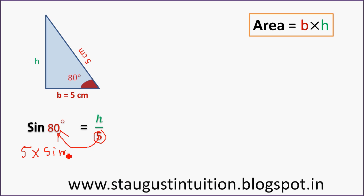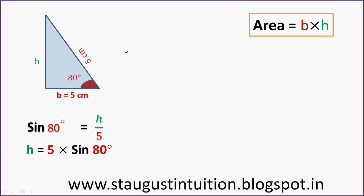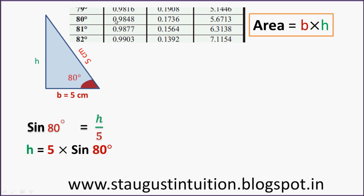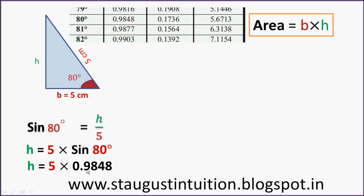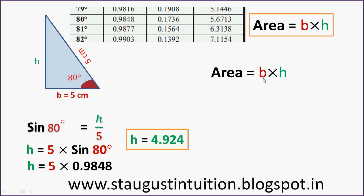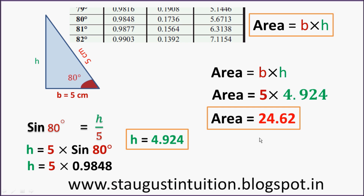Sin 80° gives us the height. So height H is equal to 5 into sin 80°. Sin 80° is equal to 0.9848, so H is equal to 5 into 0.9848, which gives H equal to 4.924. Then the area: base is 5 cm, height H is 4.924, so area equals 24.62 cm².